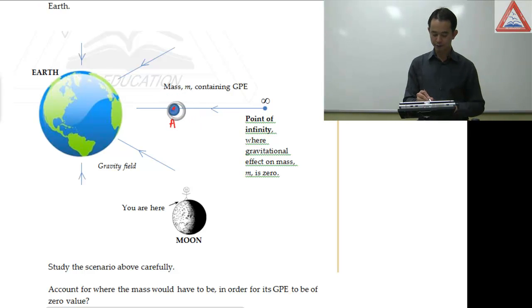Okay, so the mass, the object has a mass M, which will now contain some GPE value. Now here's another point, infinity. This point here is a point where the gravitational effect on that mass M will be zero.